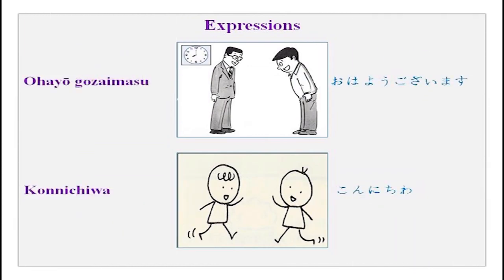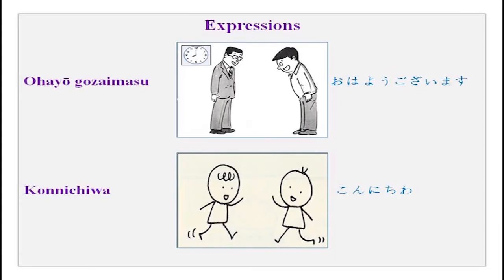There are two small expressions. 'Ohayou gozaimasu' — with a rising intonation — means good morning. You can say it from 6 in the morning till 10 o'clock, and if you are very informal with the person, just 'ohayou' will suffice. 'Konnichiwa' means good day and you can use it from 10 o'clock onwards till 5 or 6 in the evening, just before dark.